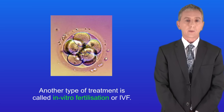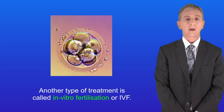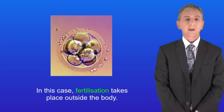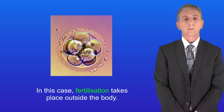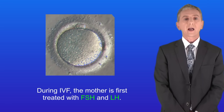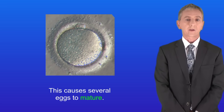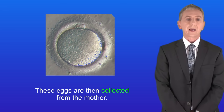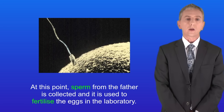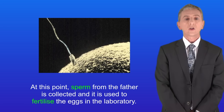Another type of treatment is called in vitro fertilization, or IVF. In this case, fertilization takes place outside the body. During IVF, the mother is first treated with FSH and LH, which causes several eggs to mature. These eggs are then collected from the mother, and sperm from the father is used to fertilize the eggs in the laboratory.